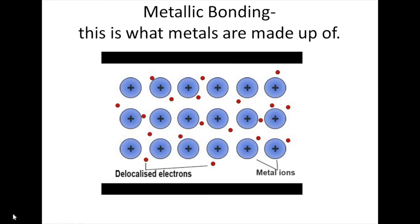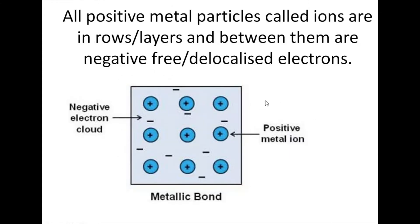Any metal will contain this type of structure. We've got positively charged ions in layers and delocalized electrons moving around in between them. Delocalized means that they can move about. So all metals have layers of positive ions and negative delocalized electrons.